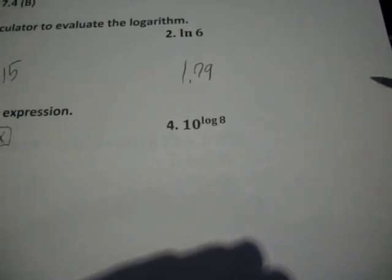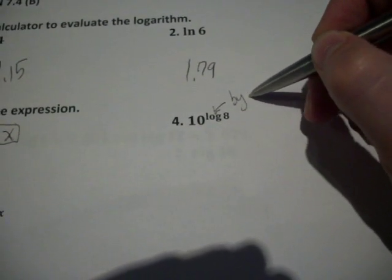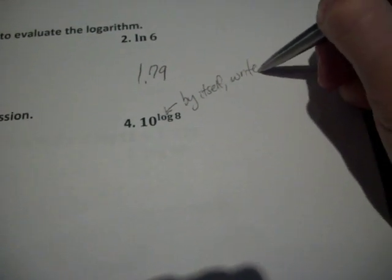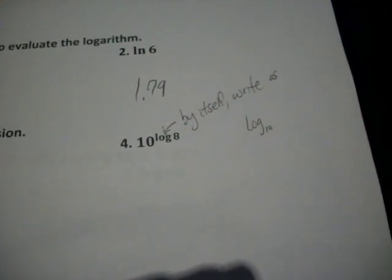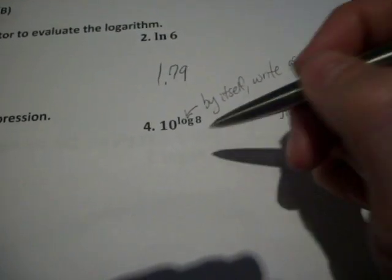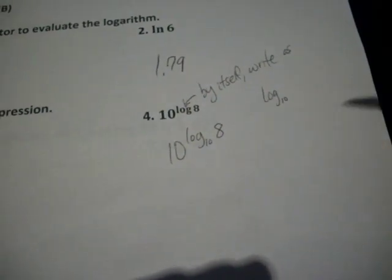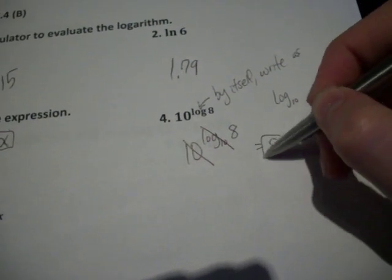So same thing here, except if you have a log by itself, you can write it as log base 10. So there's an assumed 10 there if it's not given to you. So we have that. So again, the 10 and the log 10 cancel. My answer is just 8.